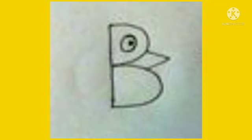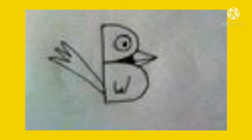First, we will write the alphabet B. In the second step, we will draw the beak of a bird and an eye, as shown in this picture. In the third step, we will draw the tail of a bird.